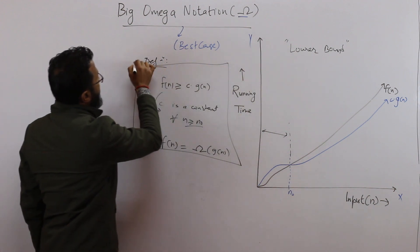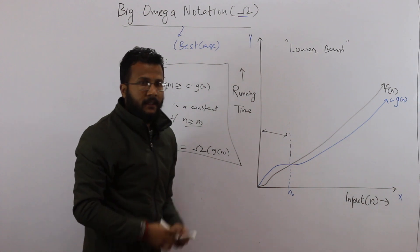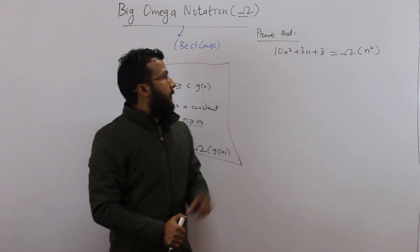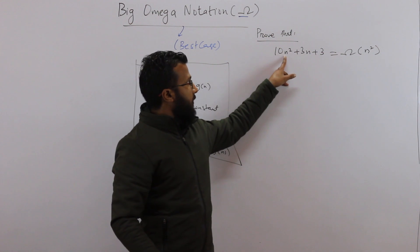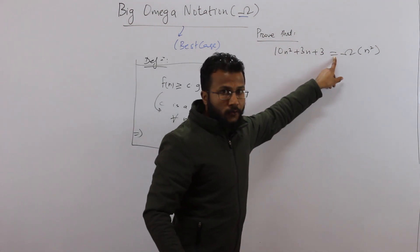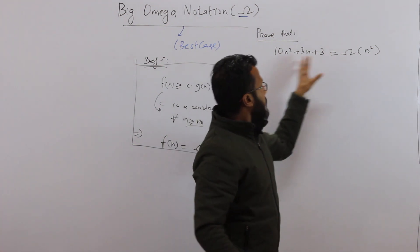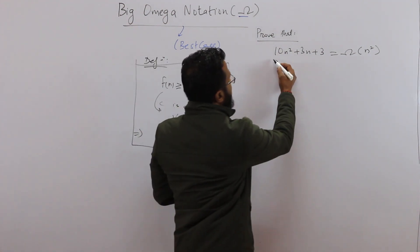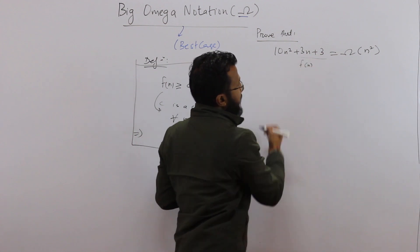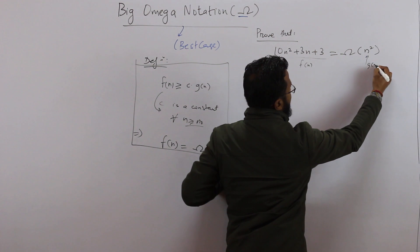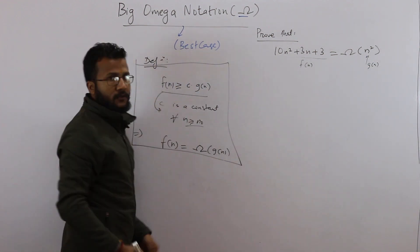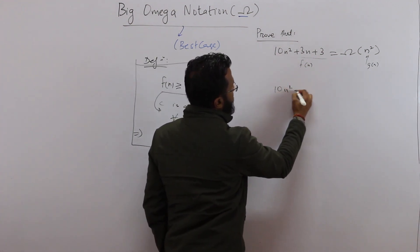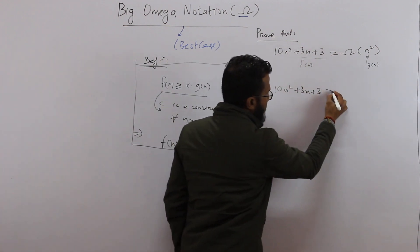Now let's solve some examples on Big Omega notation. Let us prove that 10n² + 3n + 3 is Omega of n². To prove this, first recall the definition of Omega. The left hand side, 10n² + 3n + 3, is our f(n), and n² is our g(n). By the definition, we have to show that f(n) should be greater than or equal to c times g(n). So we need: 10n² + 3n + 3 ≥ c·n².